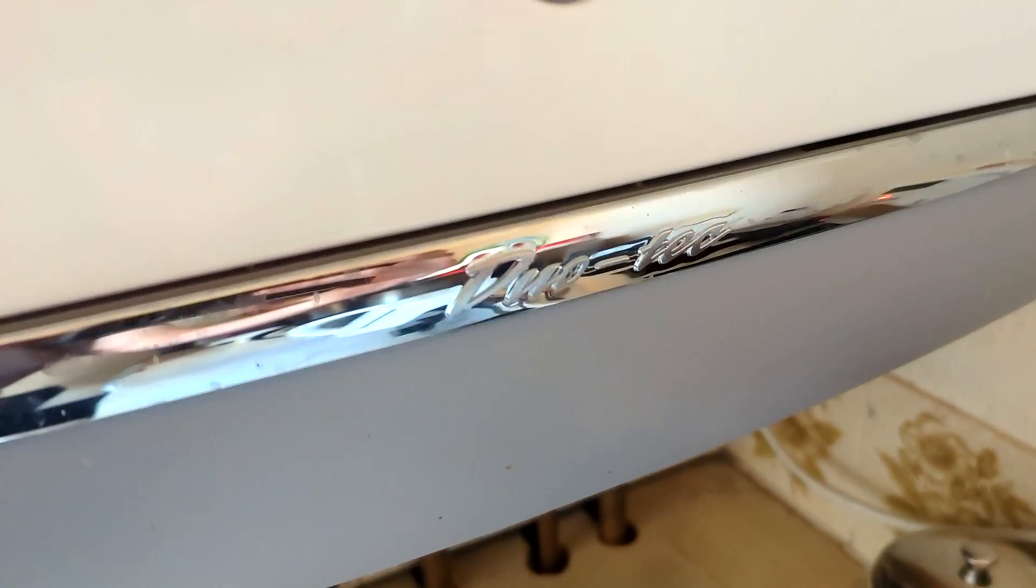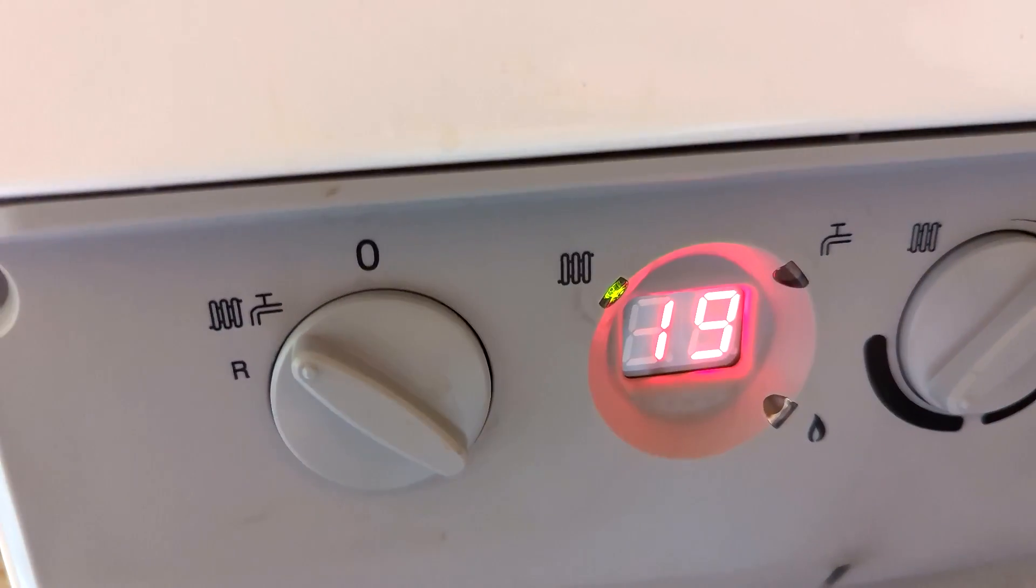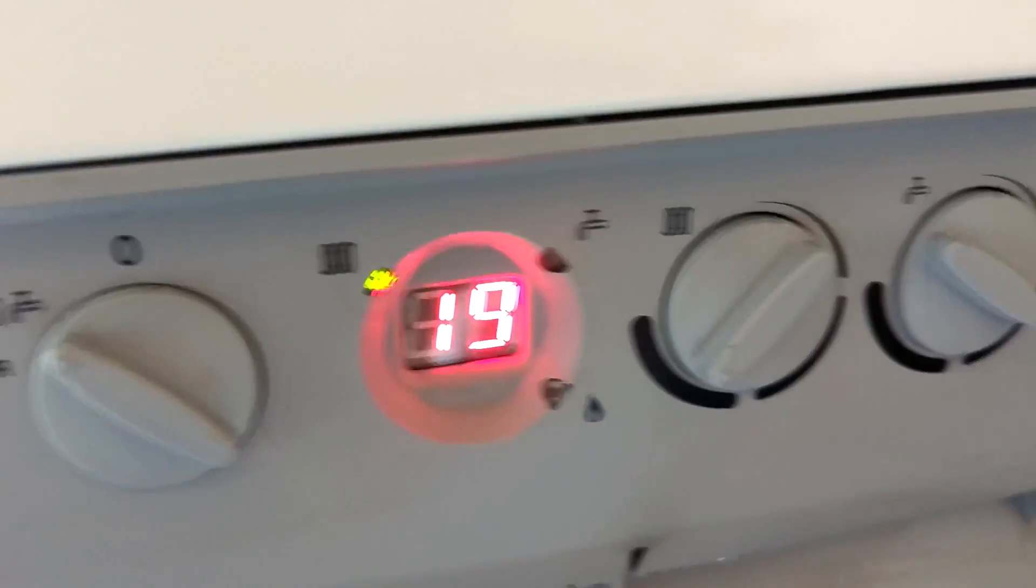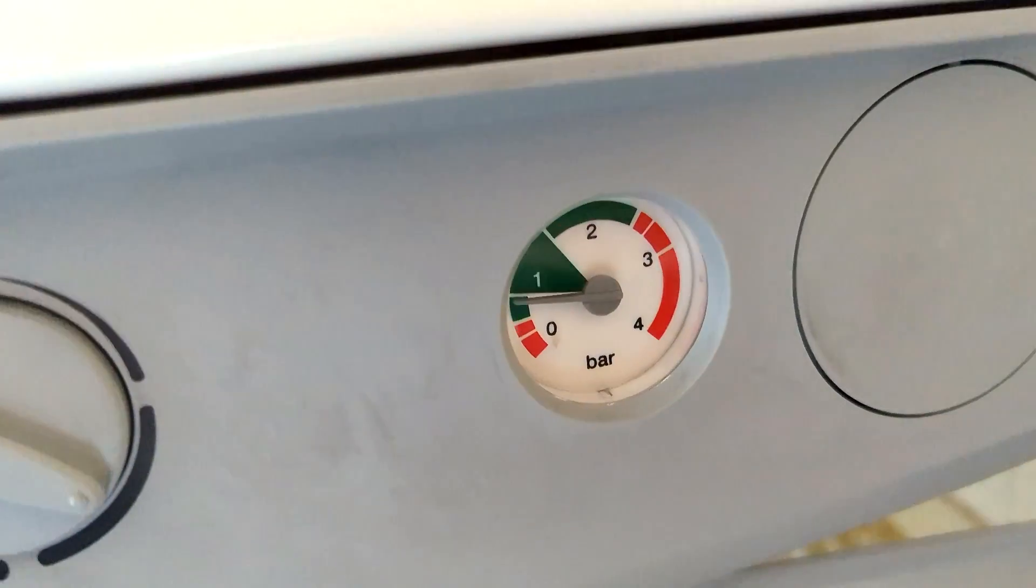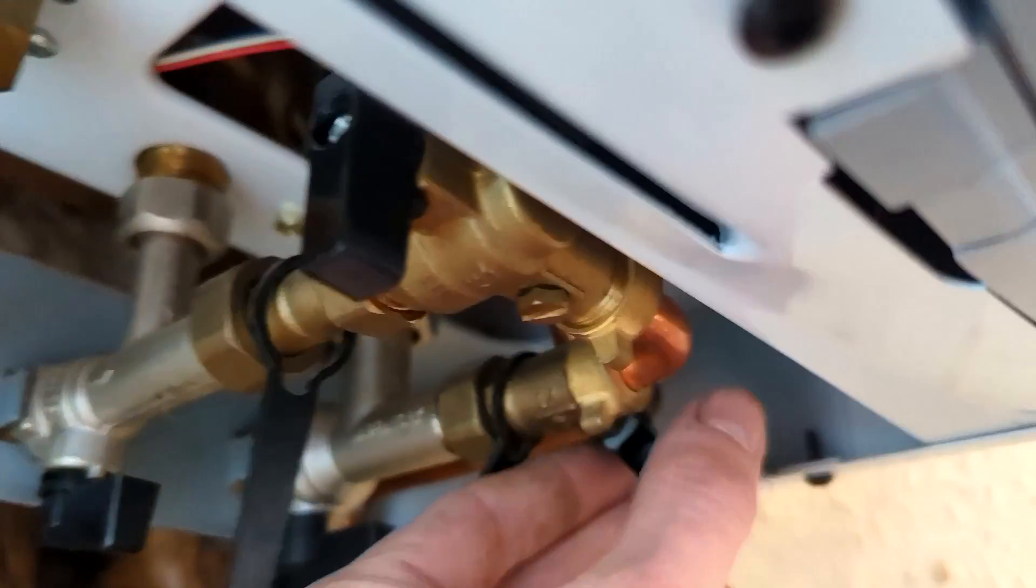So we've got a Baxi Duotec boiler, it is flashing E119 which is low water pressure, so we're going to top it off. We come underneath the boiler here. This one has got the two fitting loops that's meant to be vertical.